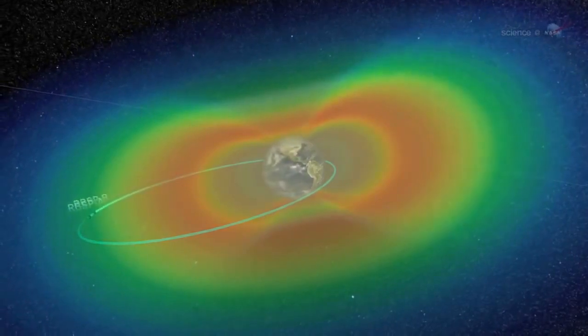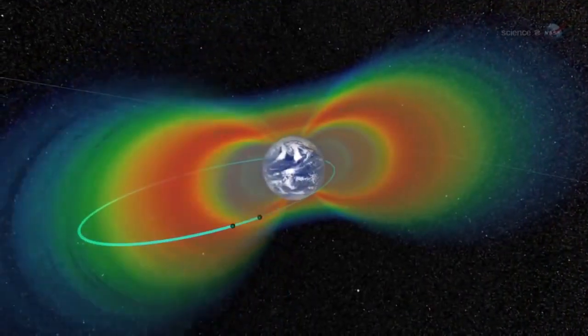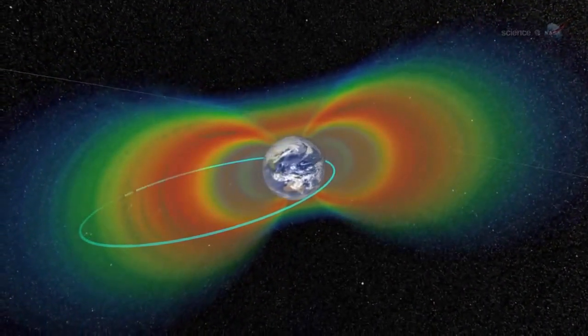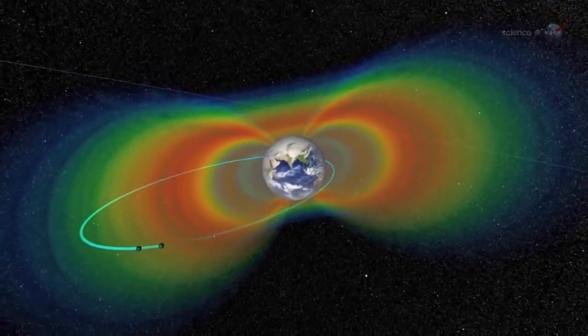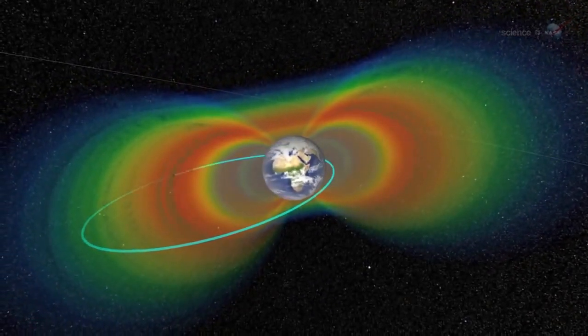Eventually, Kletzing hopes to release unprecedented stereo recordings of Earth's chorus. We have two spacecraft with two receivers, he says, so a stereo recording is possible.